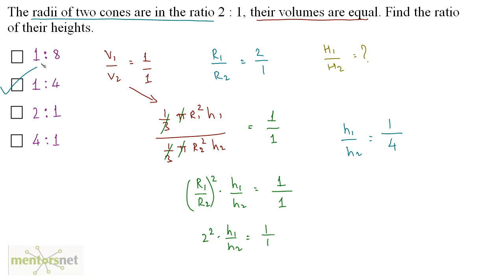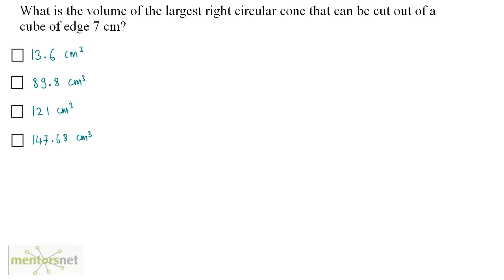That means the ratio of the heights is 1 is to 4. So option B is the correct answer.